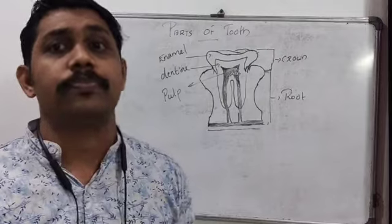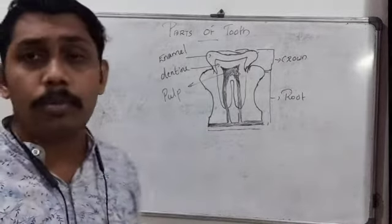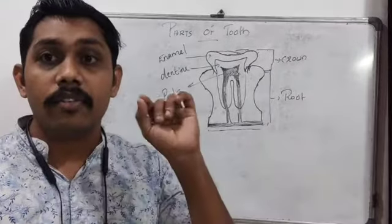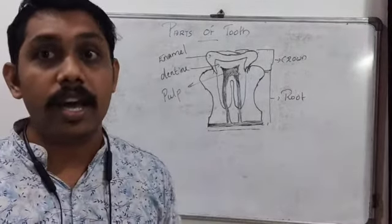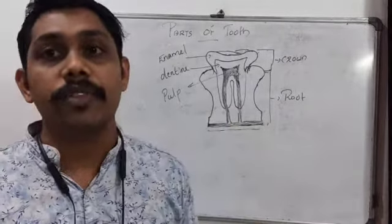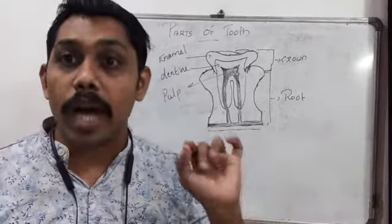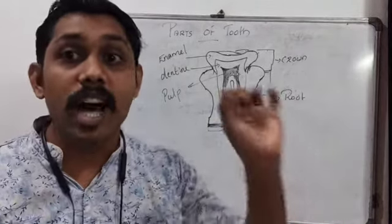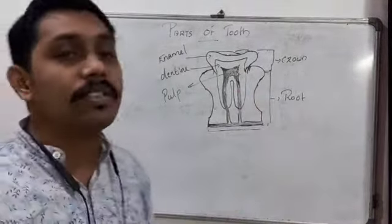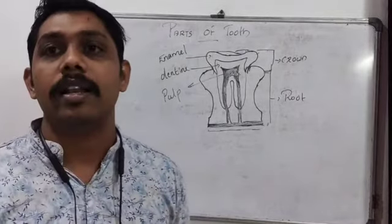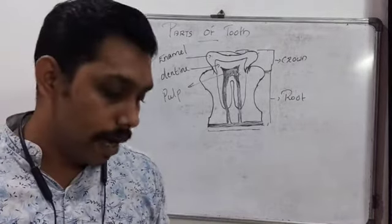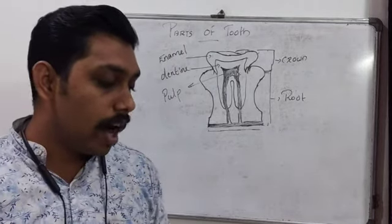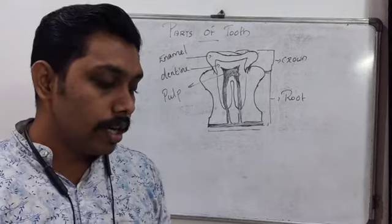There are three more parts of the tooth. The first is the upper layer of the tooth, which is white in color and the hardest part — that is called enamel. The tooth is covered with a hard white layer called enamel.